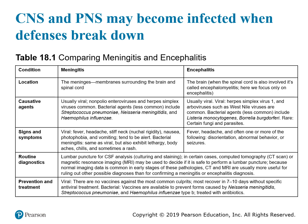Encephalitis is the actual infection of the brain. When the spinal cord is also involved, it is called encephalomyelitis. Encephalitis is usually viral — common causes include herpes simplex virus 1 and arboviruses like West Nile virus. You can also have some bacterial infections, and very rarely fungi and parasites can cause encephalitis. Symptoms include fever and headache, and it can be followed by disorientation, abnormal behavior, and seizures.